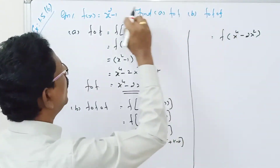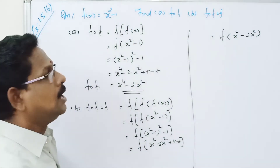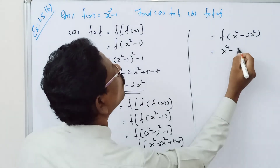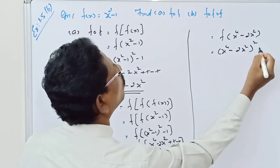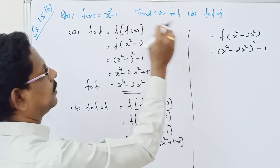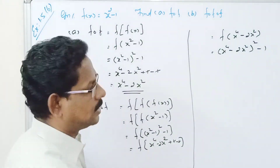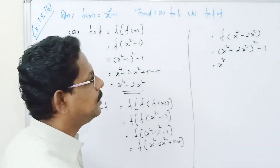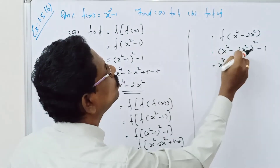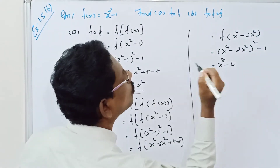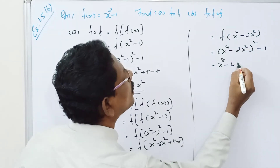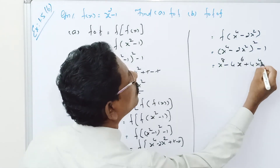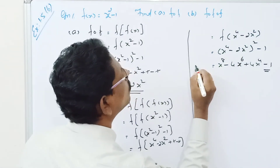Now substitute this value again: it equals x to the power 4 minus 2x squared, the whole squared minus 1. Expanding using a minus b whole squared: x to the power 4 whole squared gives x to the power 8, minus 2 times x to the power 4 times 2x squared, which is 4x to the power 6, plus 4x to the power 4, minus 1. This is your f composition f composition f.